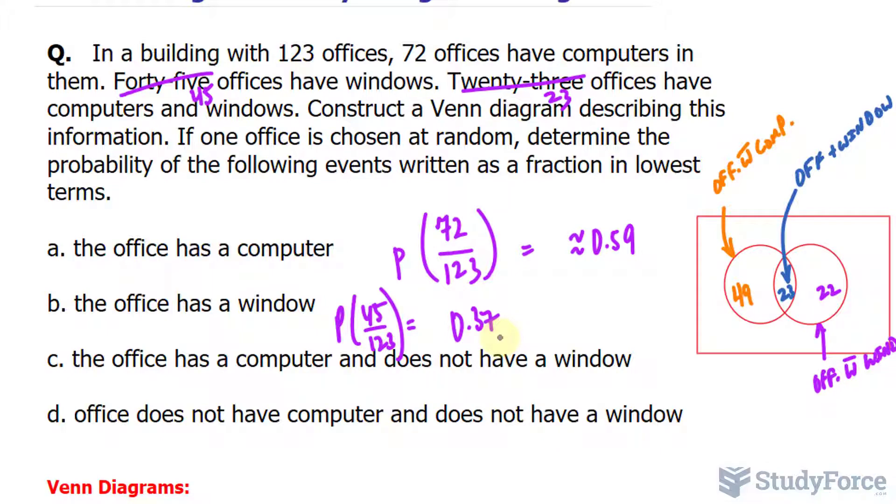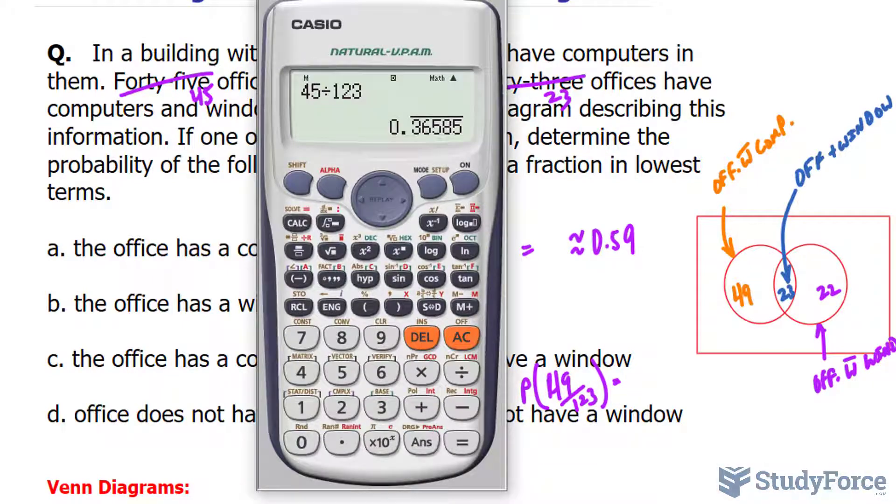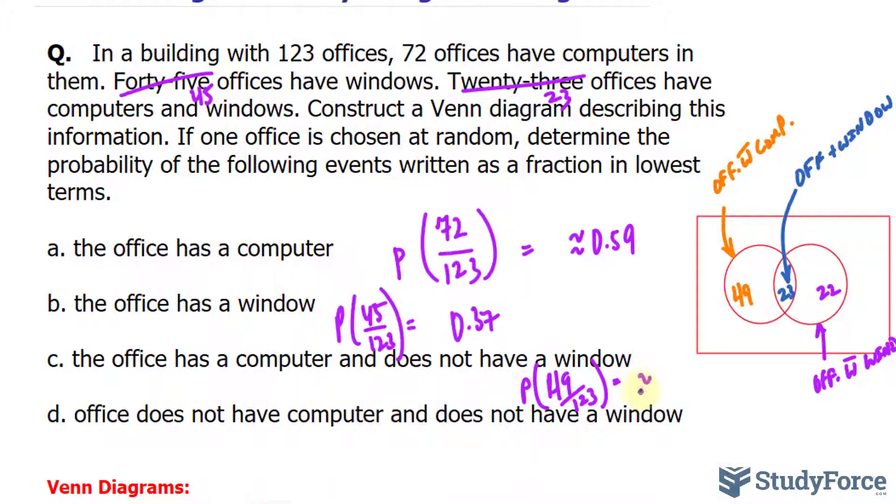In question c, the office has a computer and does not have a window. This is why the Venn diagram helps us out. This is offices with computers and does not have a window—that's 49. 49 over 123 is the probability that you will select at random an office with a computer only and no window. That is approximately 0.40.